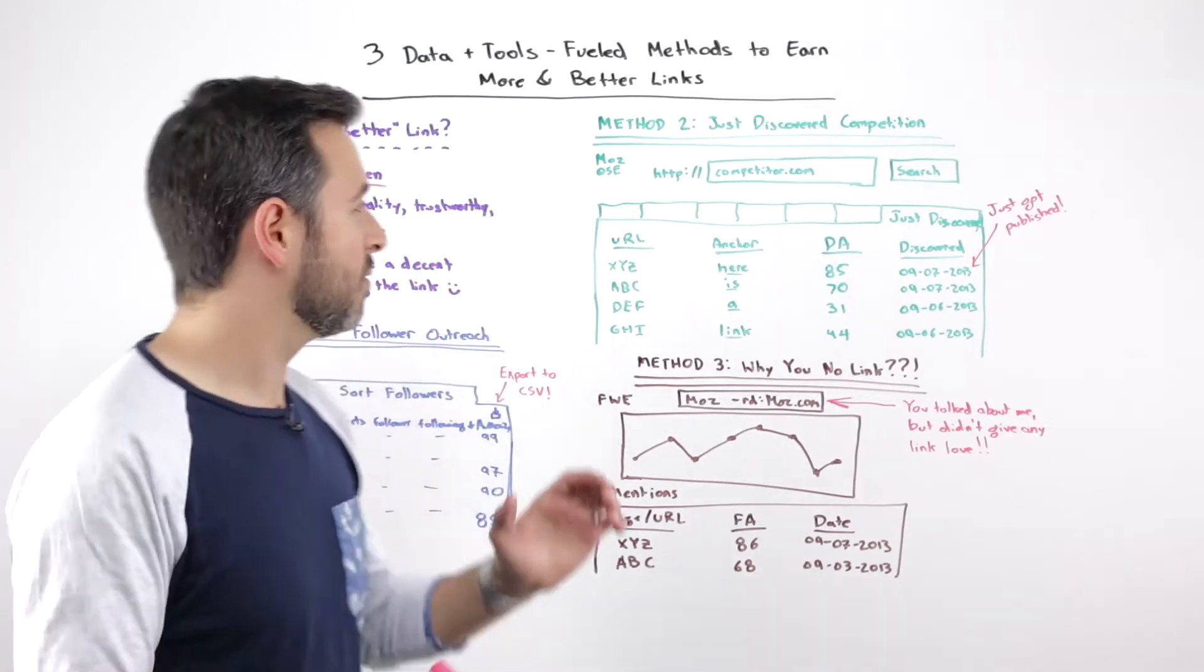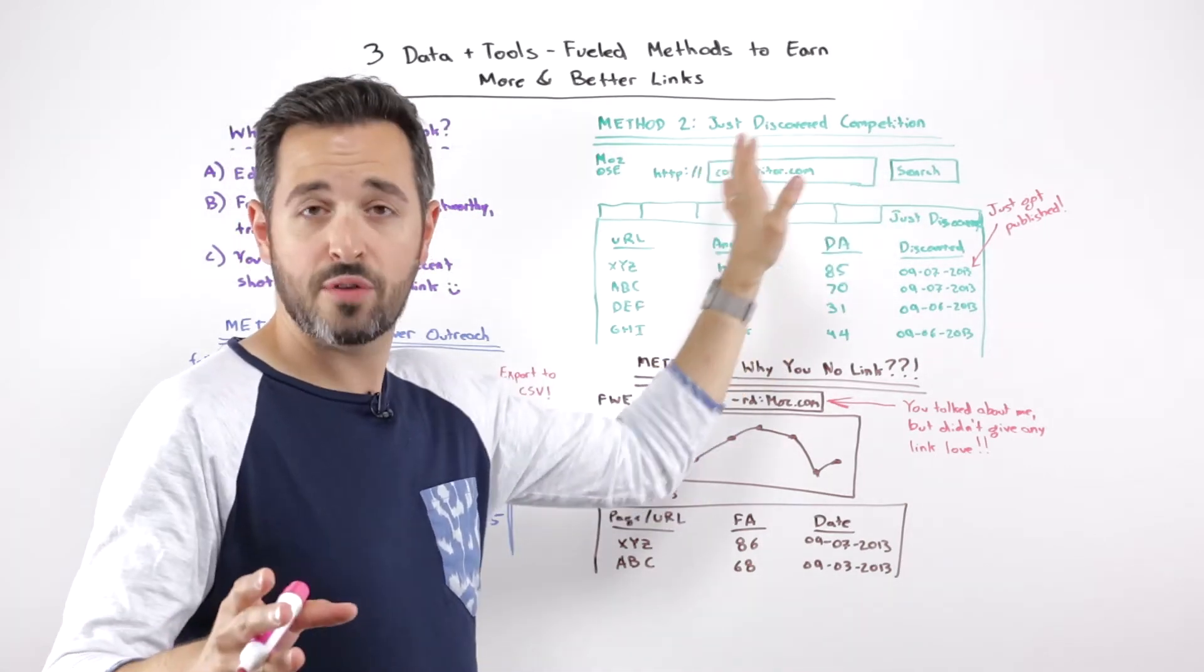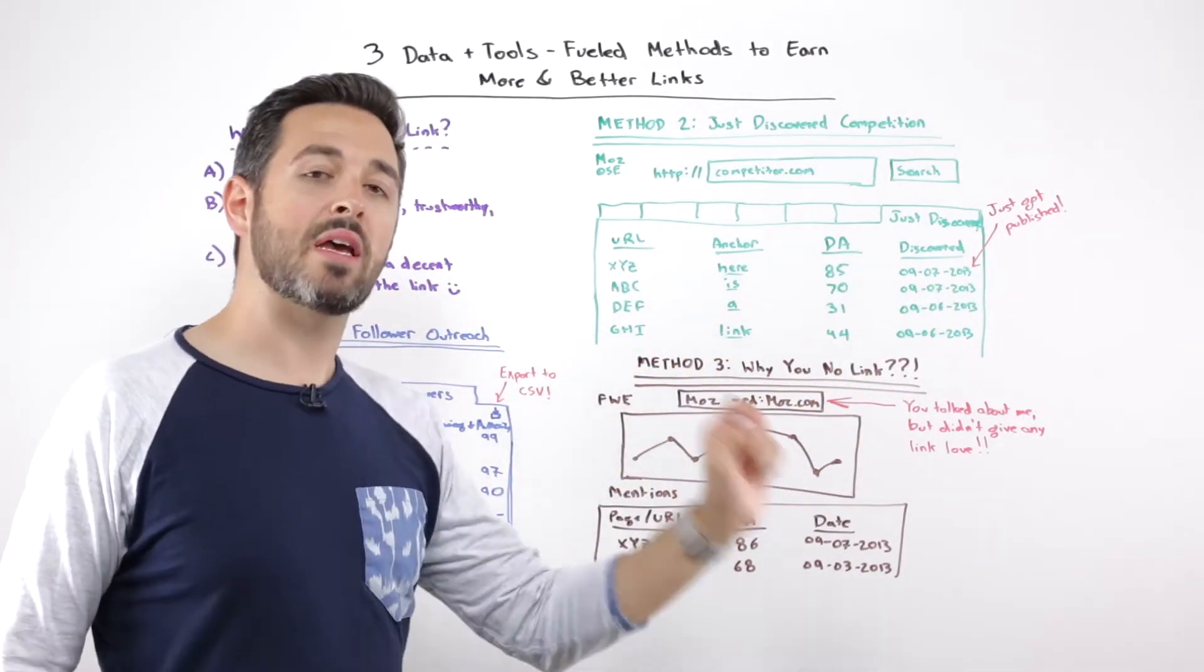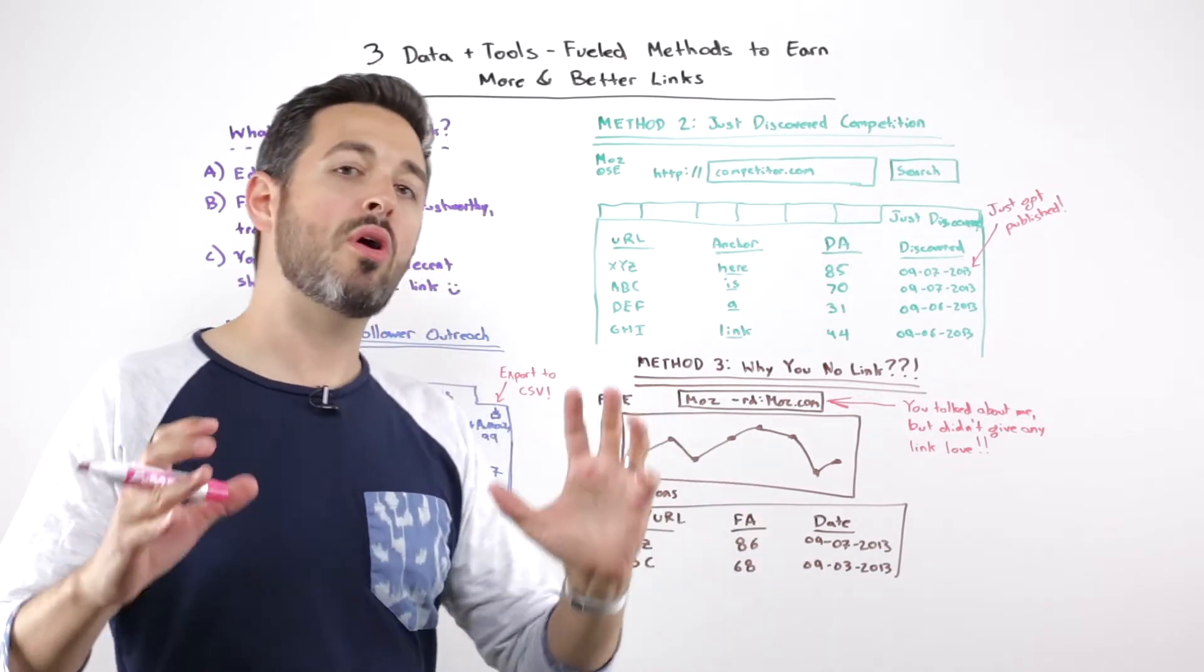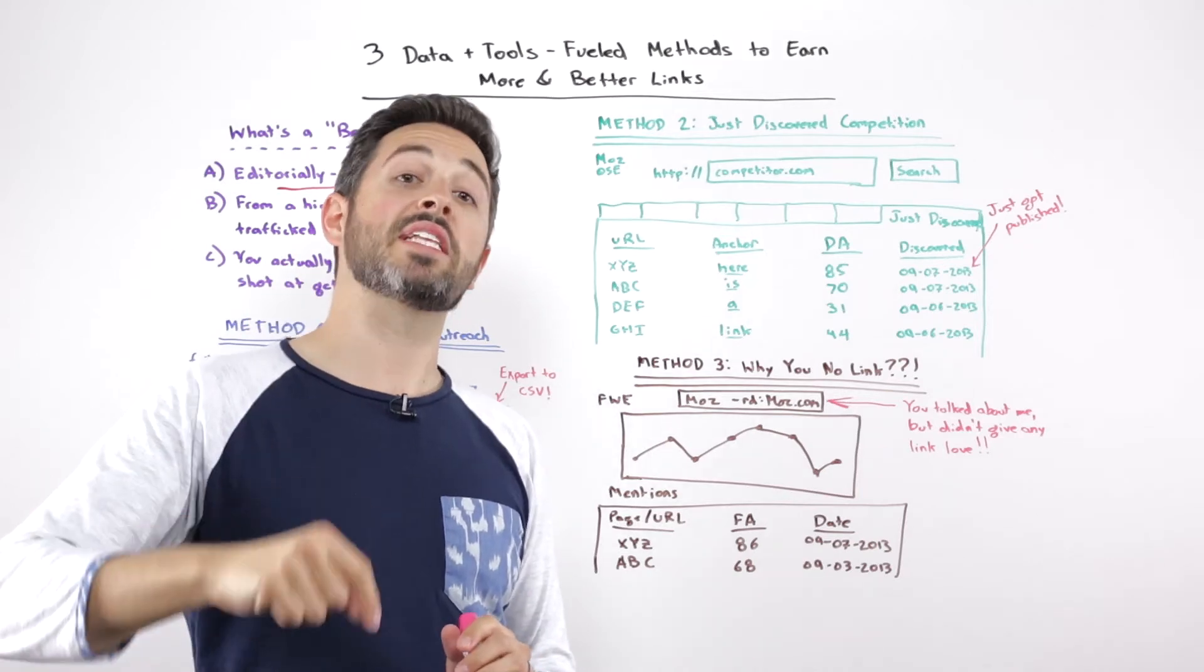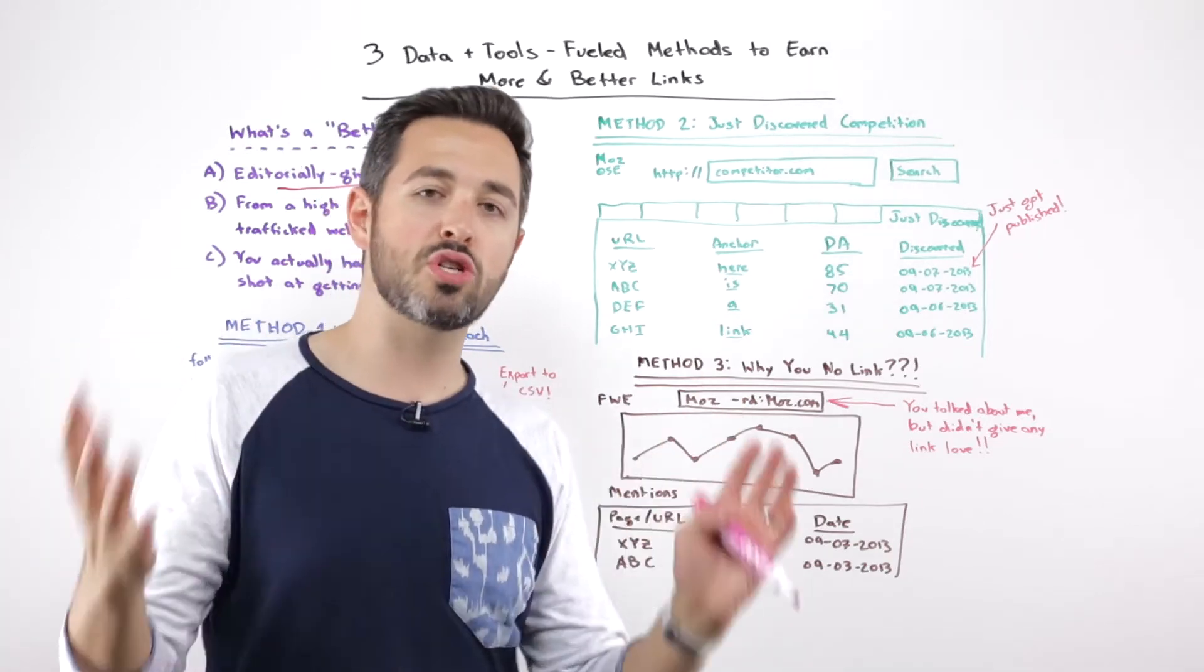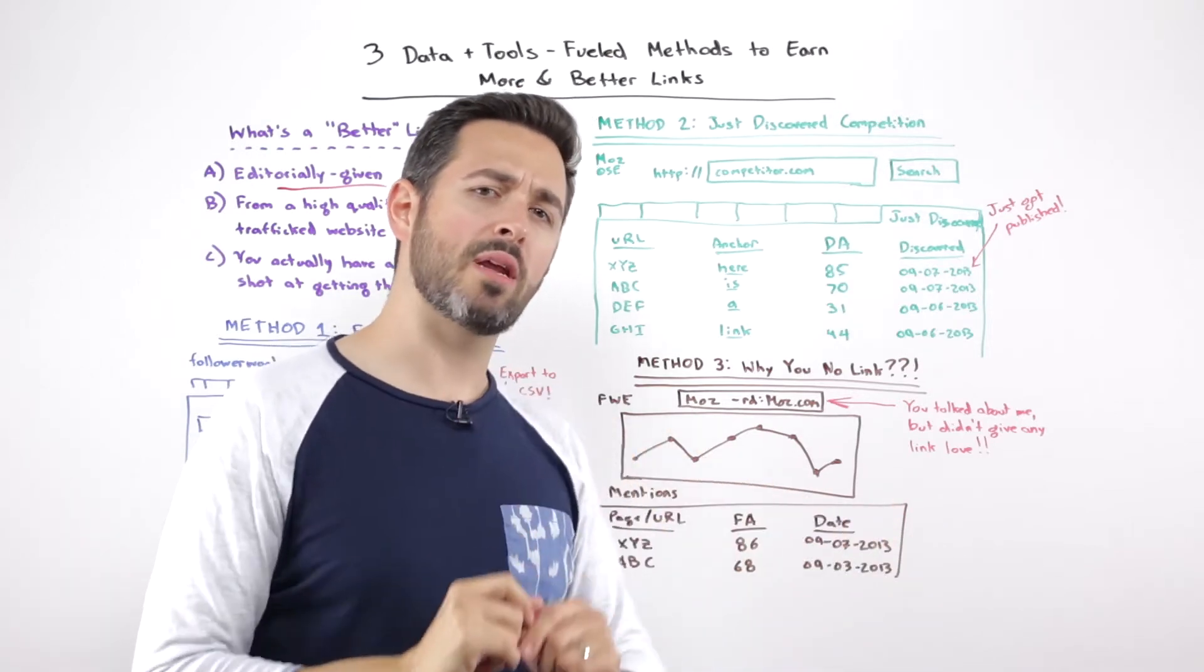This is the key. What I want you to do is go plug in a competitor. Start with just one, one of your competitor's websites. Go over to the just discovered tab and take a look at what people are writing about them and linking to them right now. And I try and go for direct competitors, the kind of competitors where it seems like a surprise if a news publication or a blogger or someone in the field, an industry thought leader, writes about them but doesn't write about you.